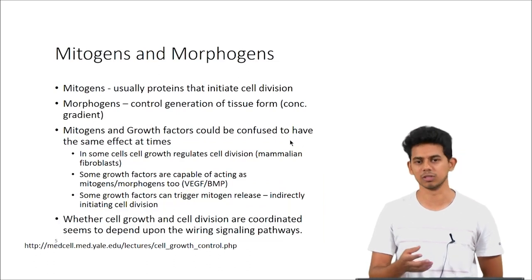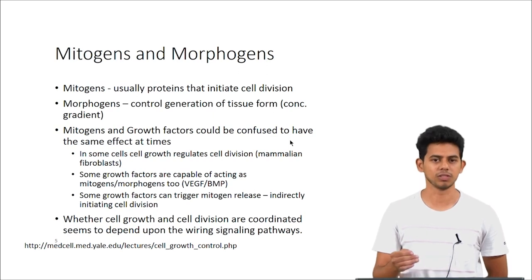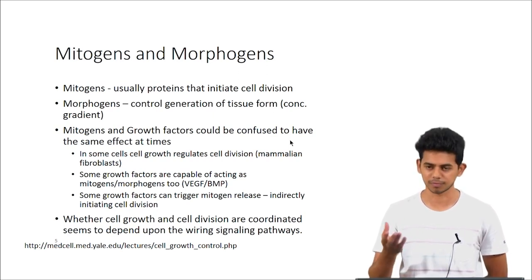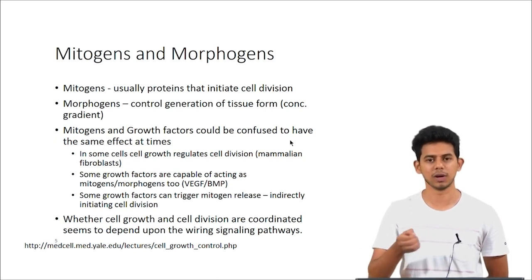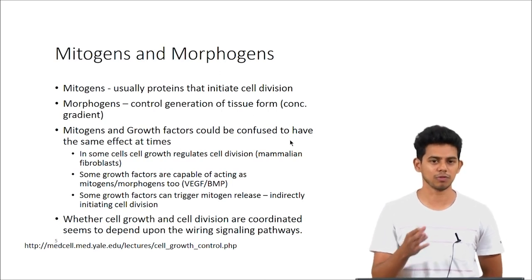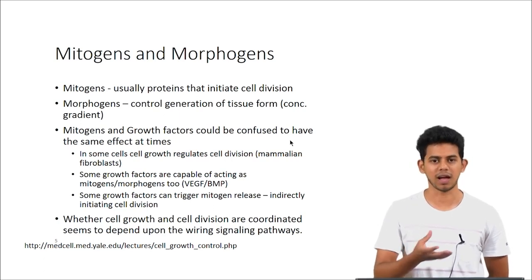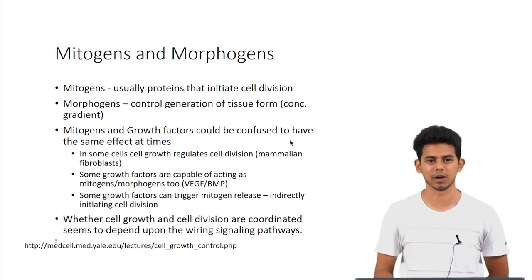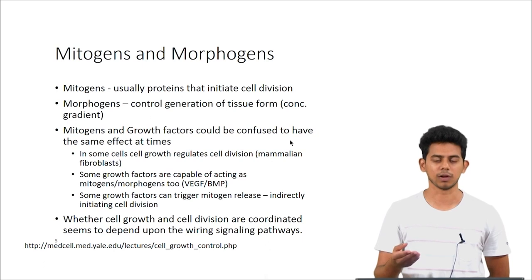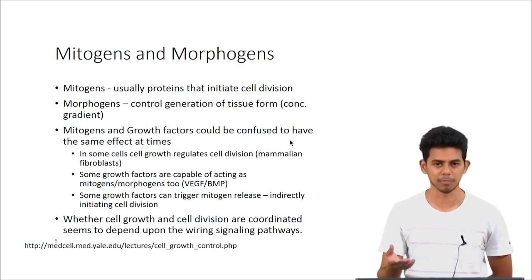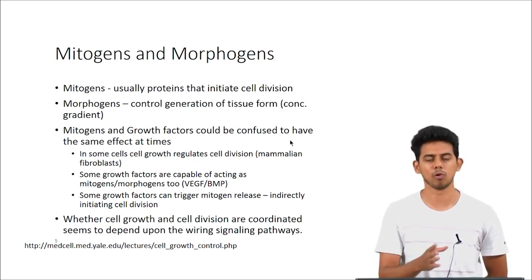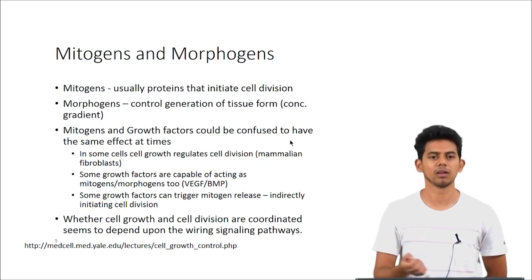To speak on what mitogens and morphogens are: mitogens are proteins that initiate cell division, whereas morphogens control the generation of tissue form — that is, the structure the tissue takes. Morphogens end up having a concentration gradient, and based on that gradient the tissue takes its form. Mitogens and growth factors can be confused to have the same effect at times, because sometimes growth and cell division are interlinked — for example, in mammalian fibroblasts, cell growth regulates cell division, and at times growth factors would activate mitogens, indirectly initiating cell division. Sometimes a growth factor can be a mitogen or morphogen, like VEGF and BMP, so there is some level of overlapping between them.